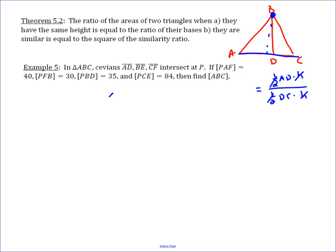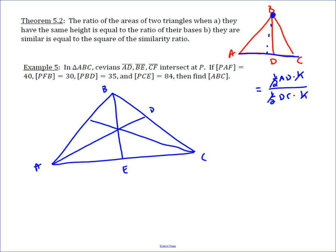For this particular problem, we'll use that idea. We've got triangle ABC. We've got cevians AD, BE, and CF that all intersect at point P here in the middle. And then this notation right here means the area of PAF. So the area of PAF is 40, and the area of PFB is 30, and the area of PBD is 35, and the area of PCE is 84.